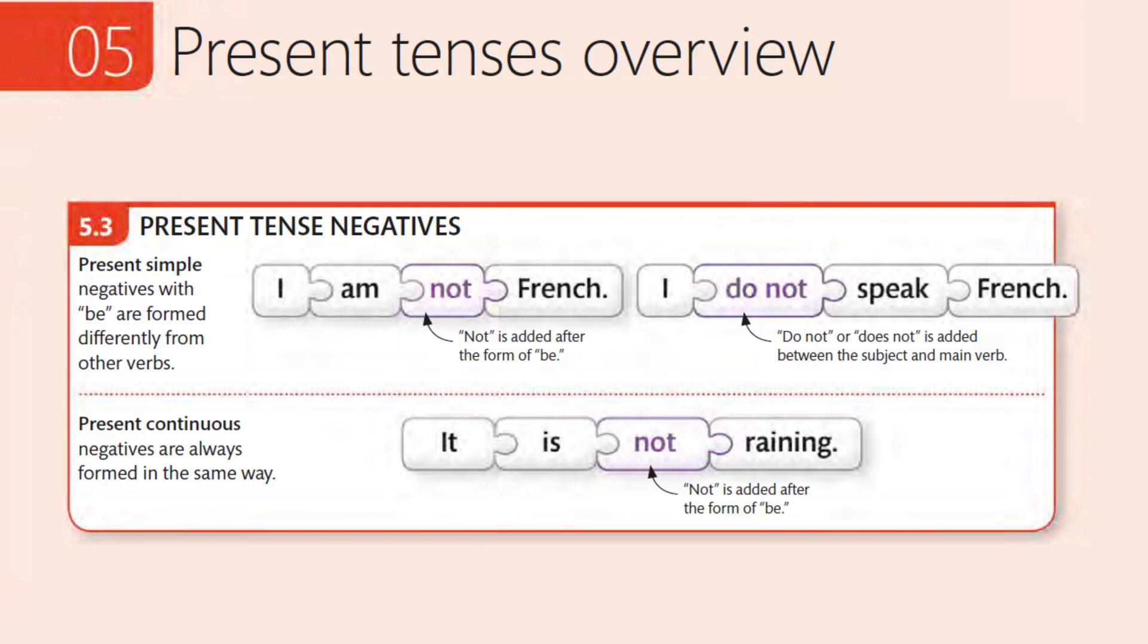Present Tense Negatives. Present Simple negatives with be are formed differently from other verbs. I am not French. Not is added after the form of be. I do not speak French.